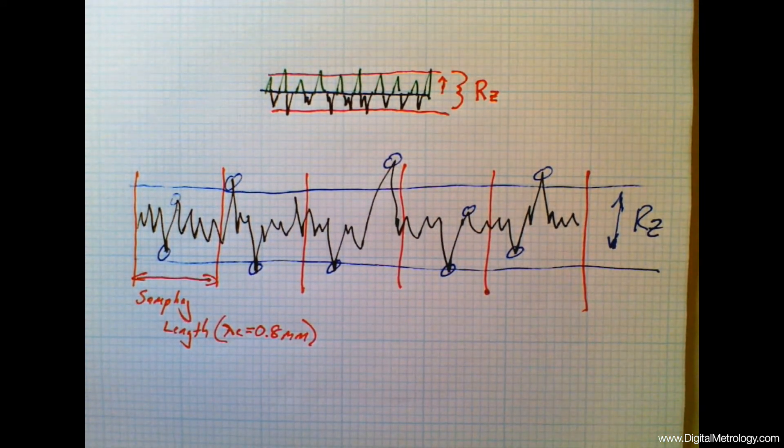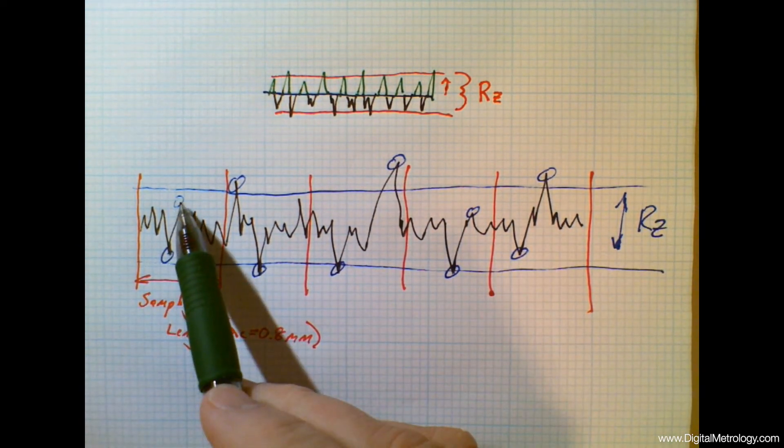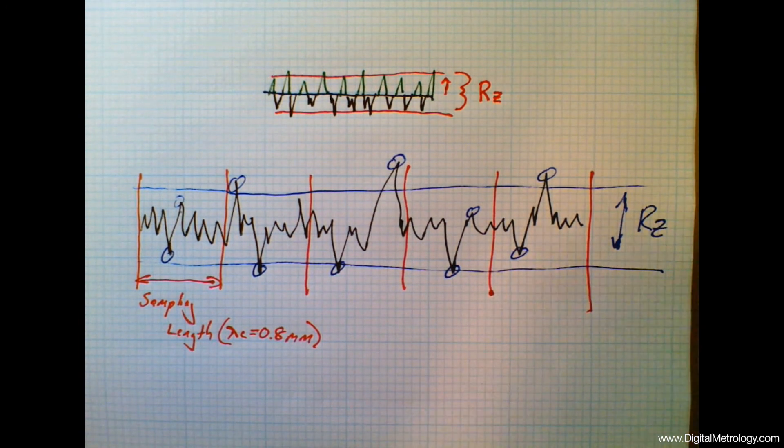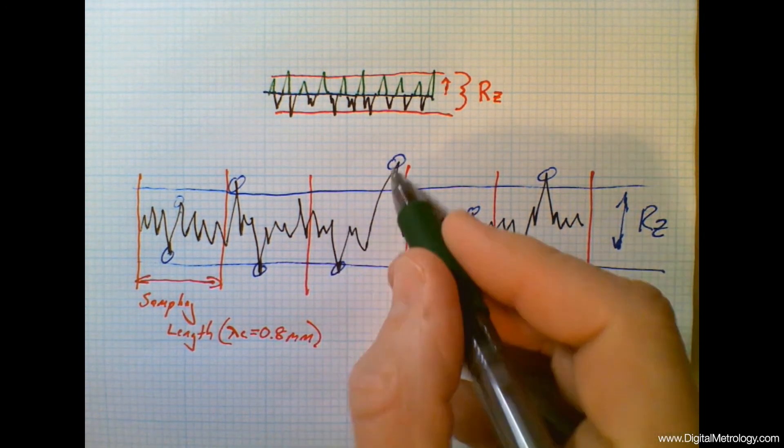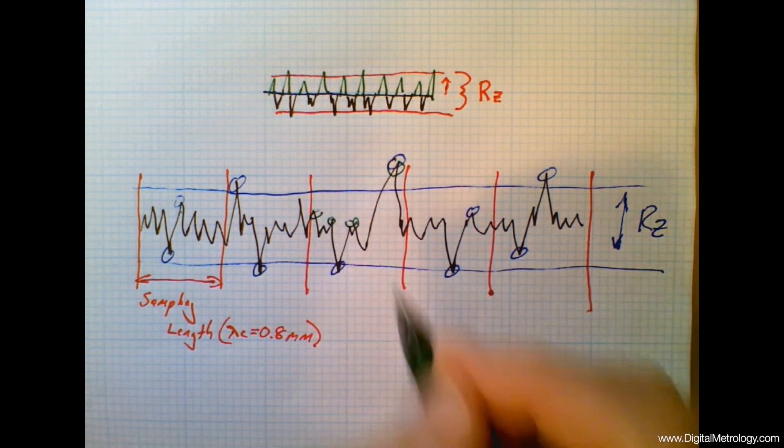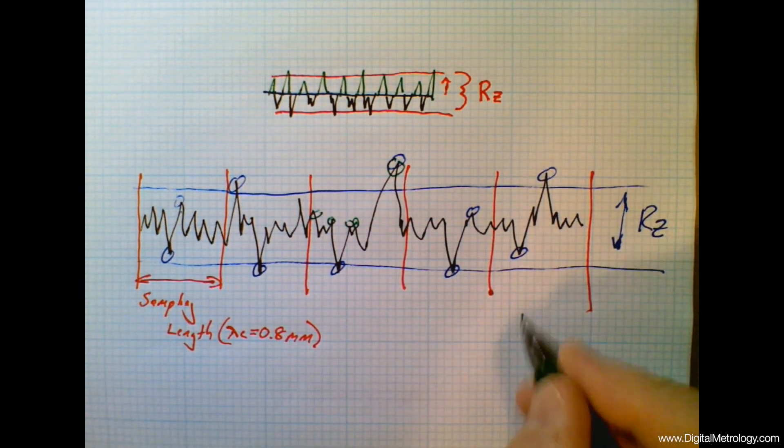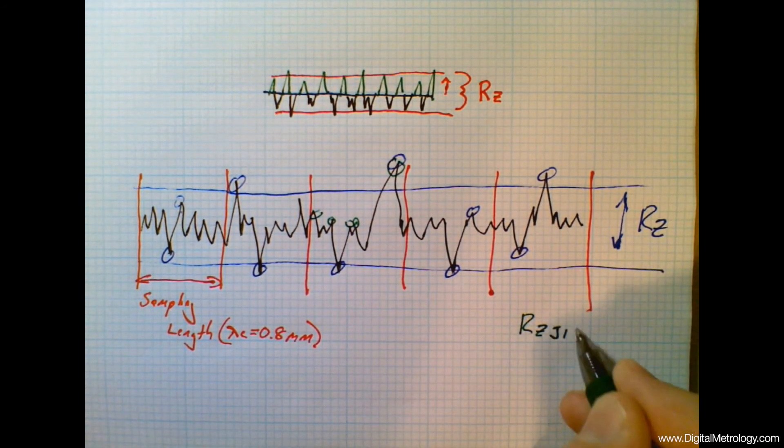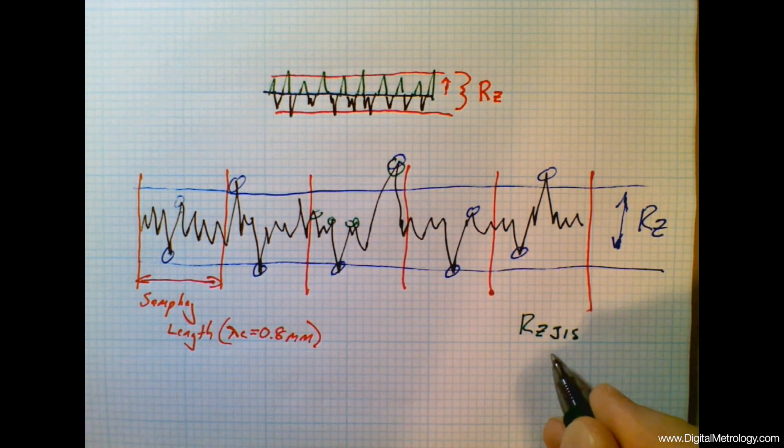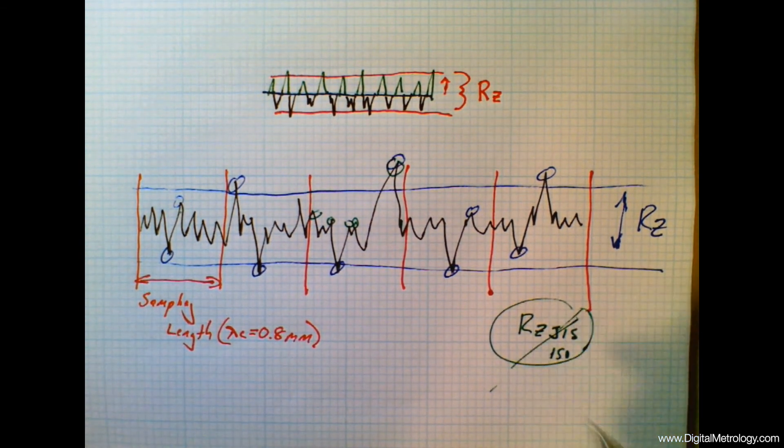Now this is the common definition of RZ. We find this in ISO standards. We find this in ASME standards. But I do want you to be aware there is a different definition where instead of five peaks, one per sampling length, there's an older definition, not as common anymore, where you put all five peaks in each sampling length. So five peaks and five valleys within each one. That's an older definition. That was a definition common in Japan, JIS standards, and it's an older ISO definition. But that's not used as commonly, but beware it exists.